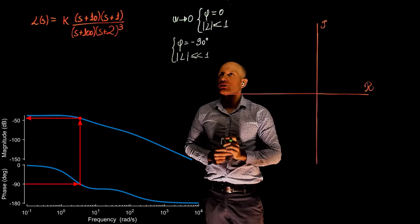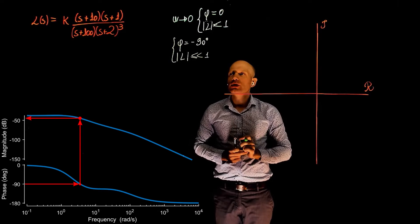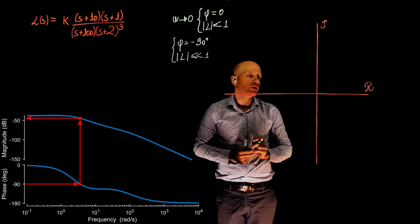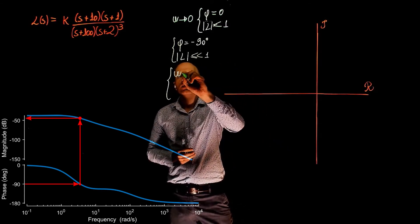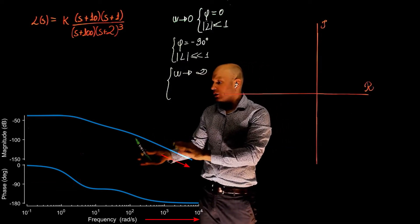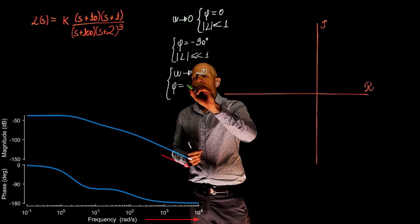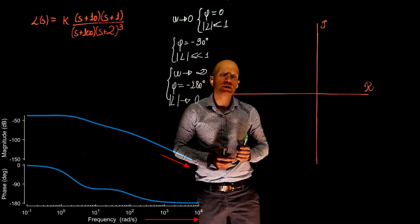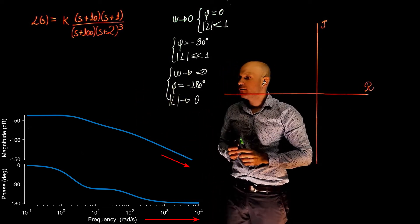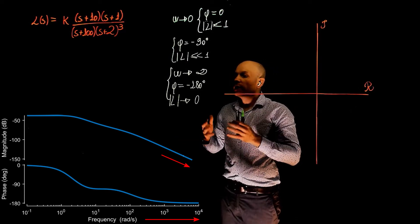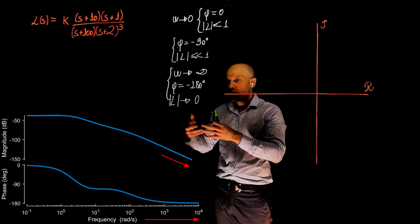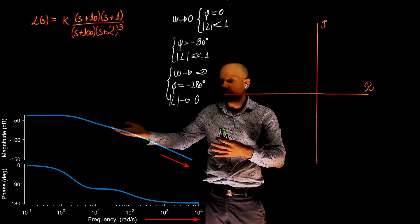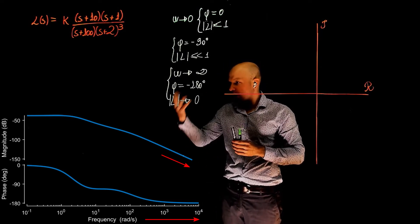Another point of particular interest is the real axis crossing. That occurs when the phase is 180 degrees. In this particular example, we are actually never crossing the 180 degree line, but we are tending to 180 degrees, and this happens when the frequency tends to infinity. When the frequency tends to infinity on the Bode plot, the phase of the transfer function tends to negative 180 degrees. The magnitude of the transfer function tends to zero, because the magnitude plot tends to negative infinity dB as the frequency tends to infinity. The 20 log of a very small number tending to zero gives negative infinity in decibels.